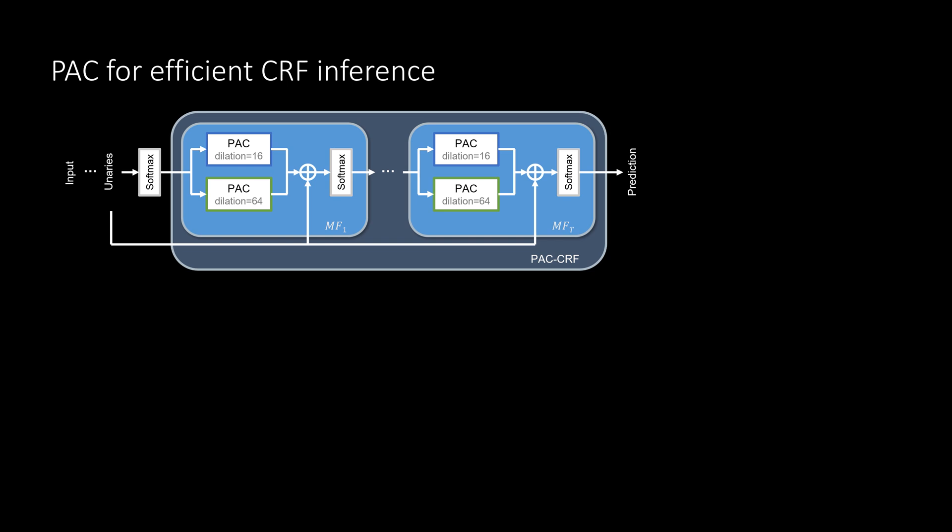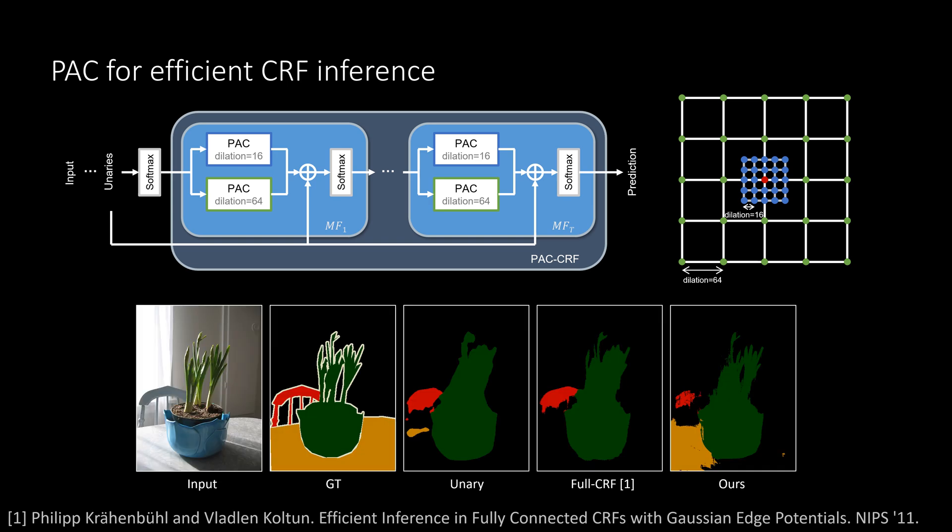As a second use case, we show that PAC can replace approximated high-dimensional filtering typically used in CRFs. A sparse pairwise connection pattern is achieved with the dilation option of our layer and helps provide faster inference on GPUs. We can produce finer visual details for some outputs and also report improved overall accuracies.